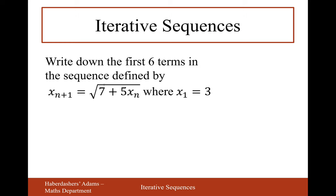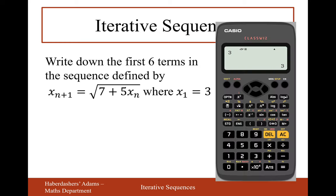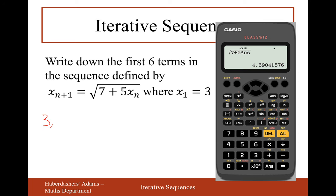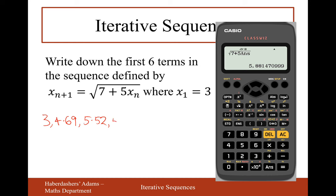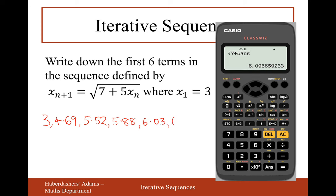The next one is a pretty difficult calculation to put in your calculator. Start with 3 as the first answer, then type 7 plus 5 times answer inside a square root symbol. 4.69 is the next number. Press equals: 5.52. Then 5.88. The 5th number is 6.03. The 6th number is 6.10.